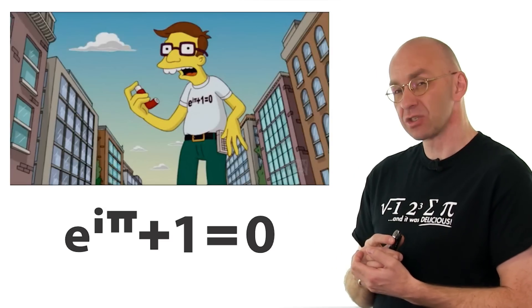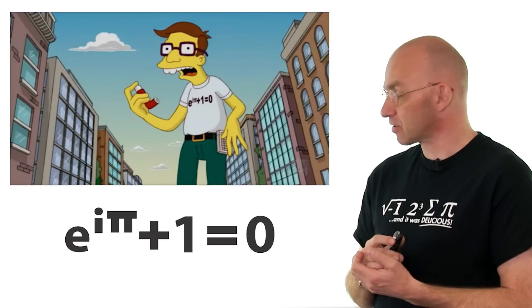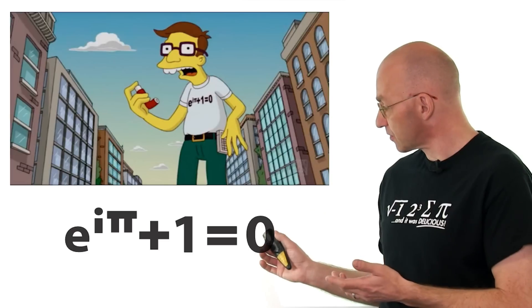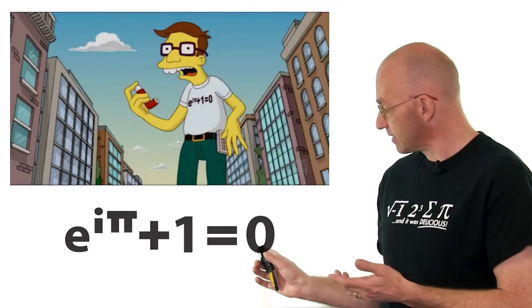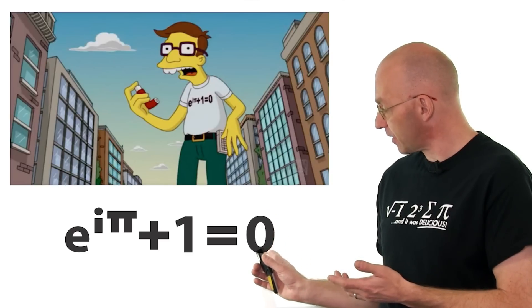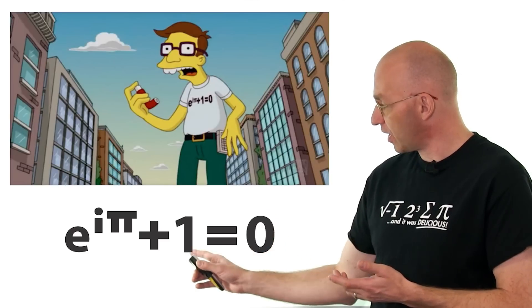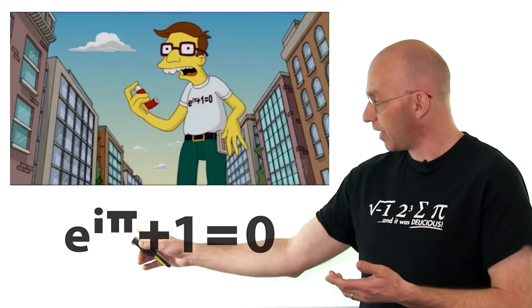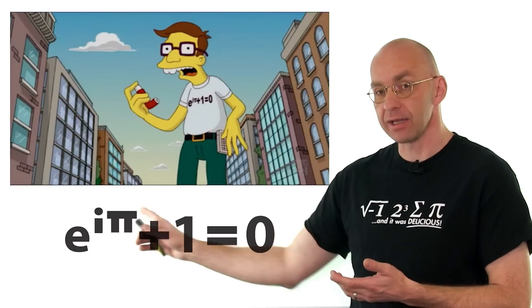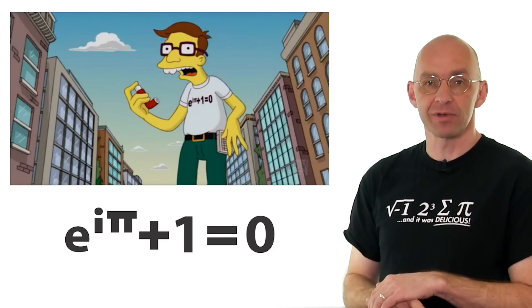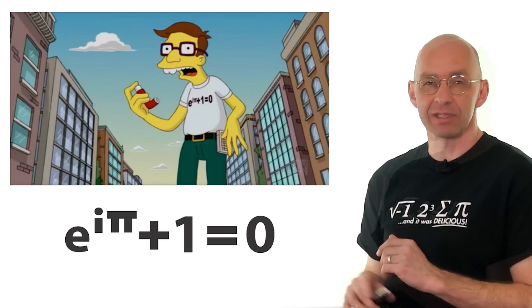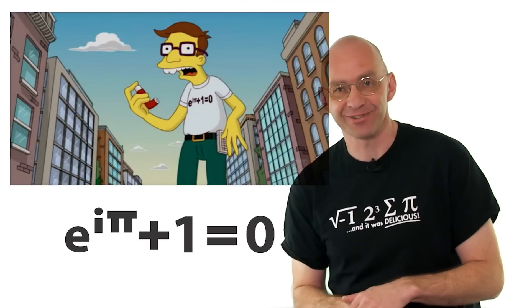And it's quite mysterious. It's got lots of mathematical friends in there — zero, one, pi, e and i. Maybe e and i you're not familiar with, but let's see how we can make sense of this.